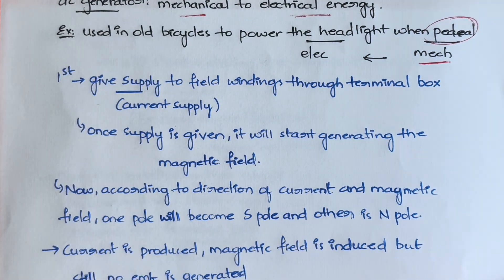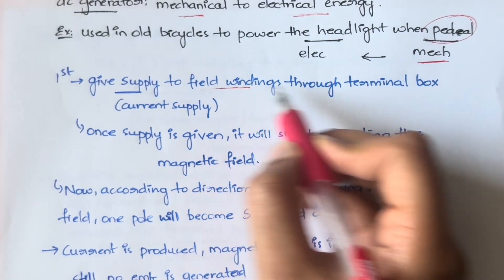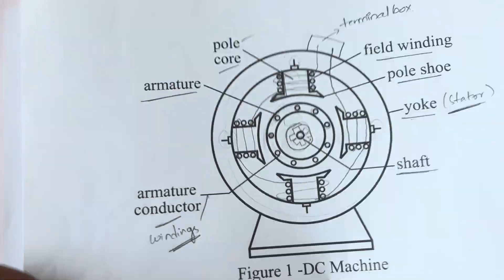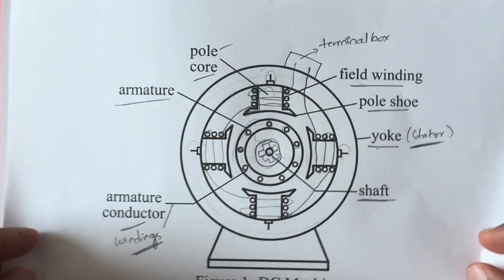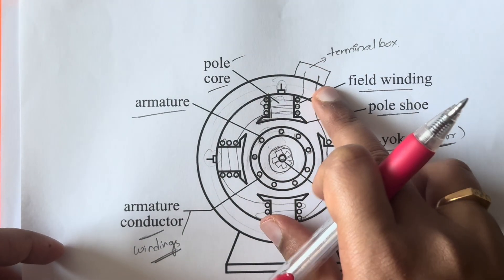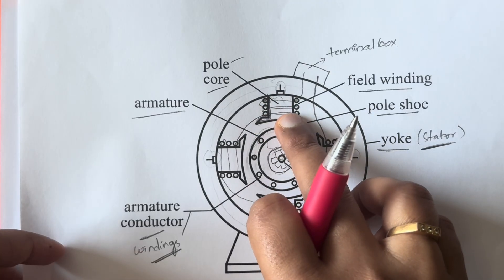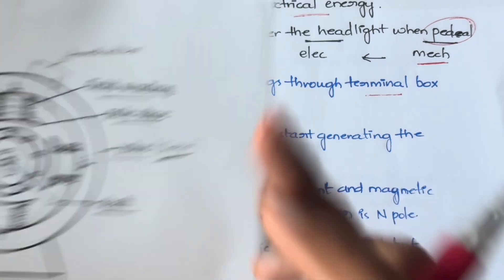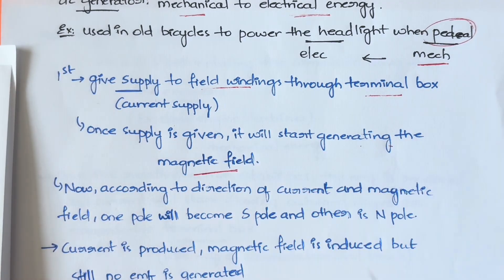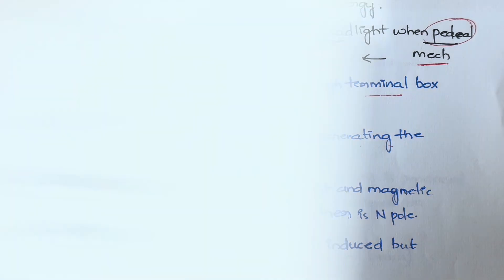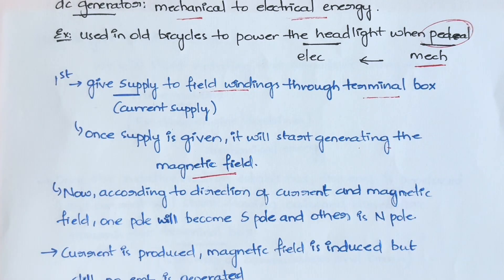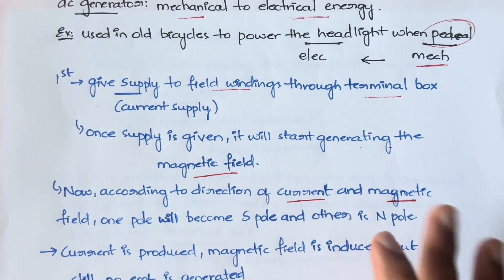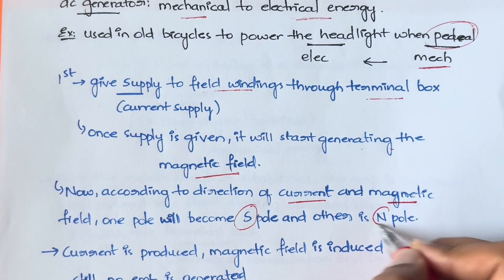Internally, what happens is: first, you give the current supply to the field windings through the terminal box. Through the terminal box you are giving the electricity supply to the field windings. Once you give the current supply to those field windings, it will start generating the magnetic field because of the current induced and the magnetic nature of the poles. According to the direction of the current and direction of the magnetic field, one pole will become south pole and the other will become north pole.